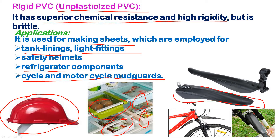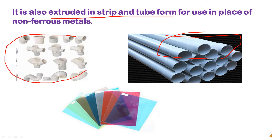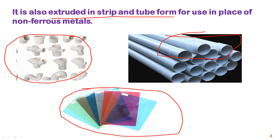Rigid PVC mudguards are replacing traditional metallic ones. PVC can also be extruded into tube form and strip form. The tube form is used as PVC pipes and pipe joints or couplings, while the strip form produces flat PVC strips. All of these are made from rigid PVC.